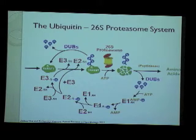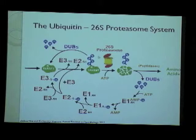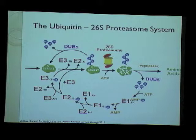The E1 then transfers the ubiquitin to an E2, the ubiquitin conjugating enzyme, through a transesterification reaction. The E2 is usually the protein that transfers ubiquitin to the target molecule, typically with the help of an E3 enzyme — the ubiquitin ligase. The E3 serves, along with two other proteins, as a scaffold that brings the target and E2 close together so that ubiquitin can be transferred. Specificity for the entire reaction is also provided by the E3.